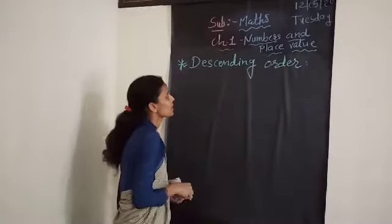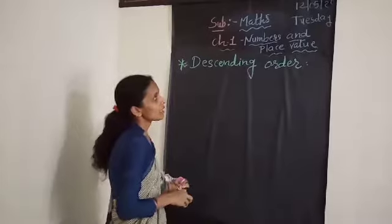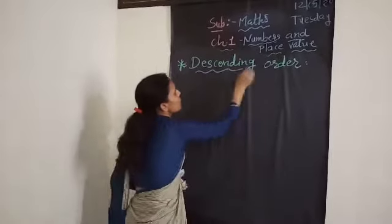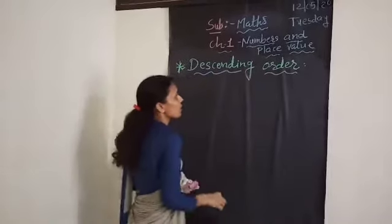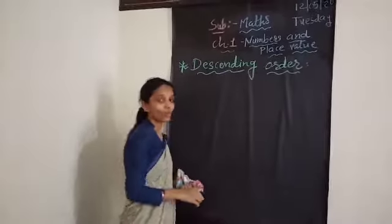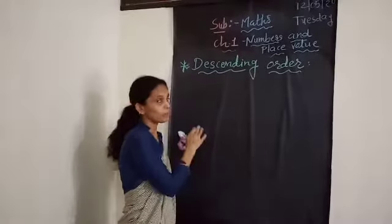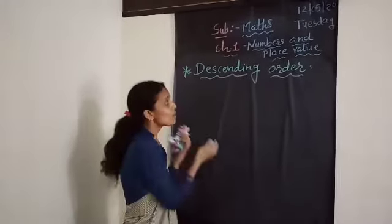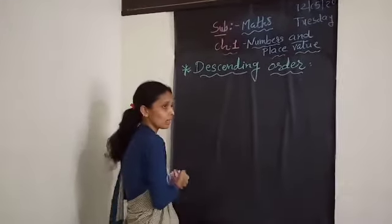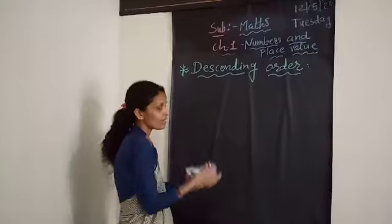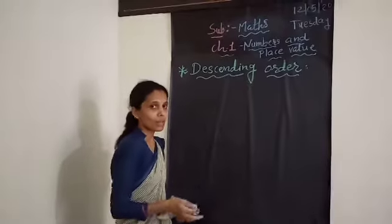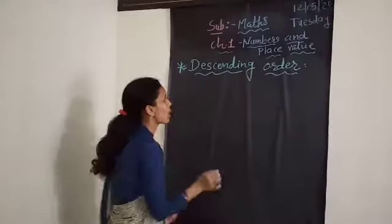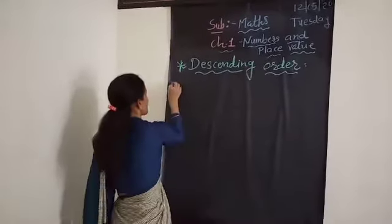The next and last topic is Descending Order. In descending order we go from bigger to smaller — we write the biggest number first, then smaller, then smaller, and then the smallest number.